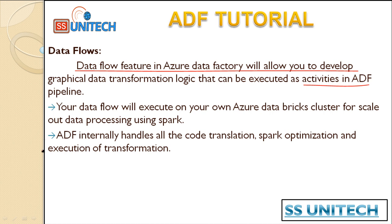The most important thing to understand here is that we can have one, two, or more than two sources. For example, there is source one and source two, and we want to do certain transformations based on these two sources — that can be done under data flows. This is similar to what we have done inside SSIS with transformations, where we modify our raw data.